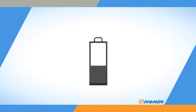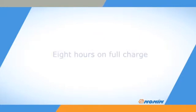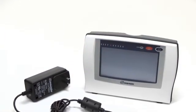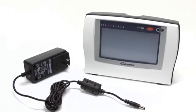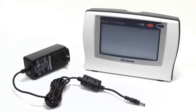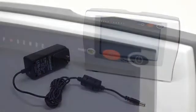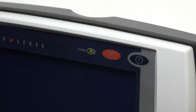The battery charge level displays a black bar in the battery icon, and the display will indicate when you must recharge the battery. The monitor can run up to eight hours on the internal battery when fully charged. The battery will charge when the unit is plugged into wall power, whether the monitor is in use or turned off. The charge indicator will illuminate green when the battery is charging.